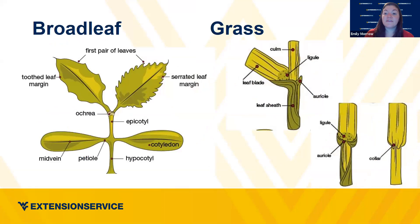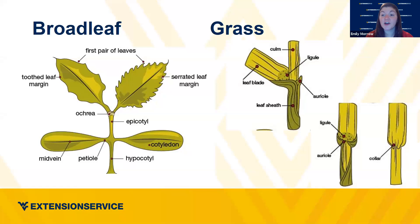Weeds can also be two different types that influence how we control them: broadleaf weeds — things like dead nettle and dandelions — and grasses, like Johnson grass and Japanese stilt grass. That distinction influences how we're able to control them. If you're not opposed to using chemical control, you'll find herbicides that are selective. Most commonly on the homeowner side, herbicides will either kill broadleaf plants or grass plants. If you spray something to kill broadleaf plants, you're also going to kill clover, because it's a broadleaf plant too.